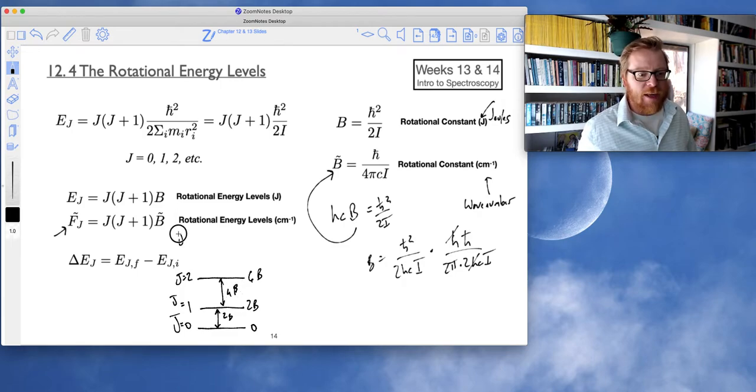Let's keep going with this thing. j equals 3. This is probably as high as I can go on my picture here. So if j is equal to 3, 3 plus 1 is 4 times 3 is 12. 12b. And the difference between these levels is now 6b.